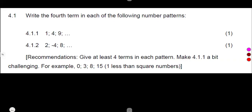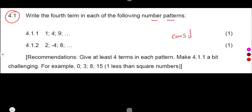On this question we are given — that's another typical exam question. On question 4.1: write down the fourth term in each of the following number patterns. You must study and see what is happening from one term to another. For the first one, the terms are 1, 4, 9. When dealing with number patterns, start with the constant difference before you think of the ratio.